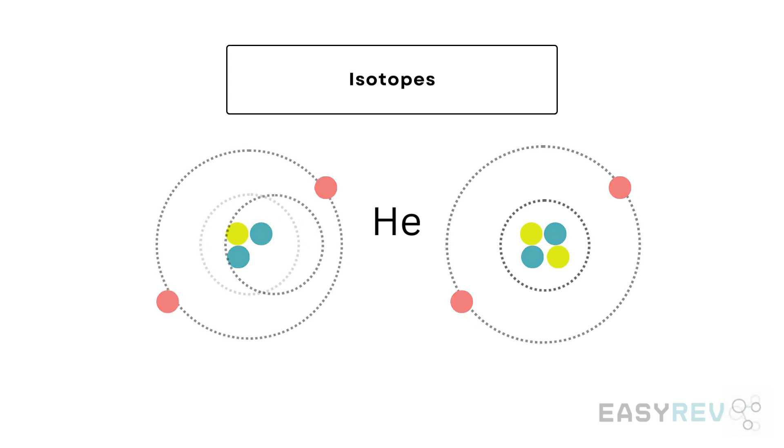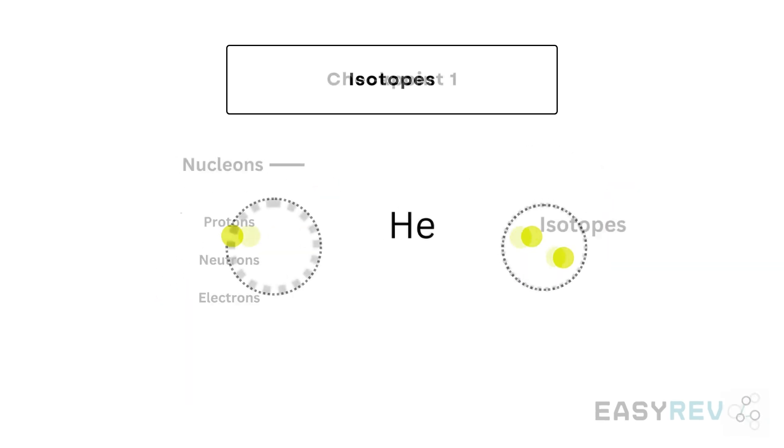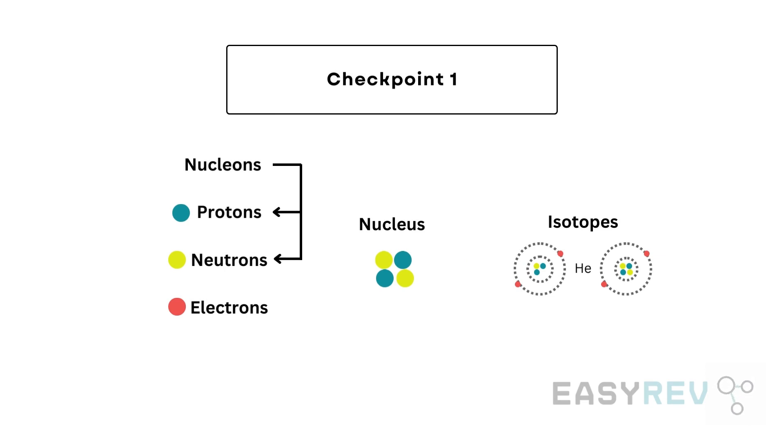So we have reached our first checkpoint. We talked about the atomic structure, and in doing so we talked about the subatomic particles and their features, namely the proton, the neutron, and the electron. We saw how they're arranged in the atom and we saw how they can be counted in the periodic table of elements. And through the example of helium, we finally introduced the notion of isotopes.